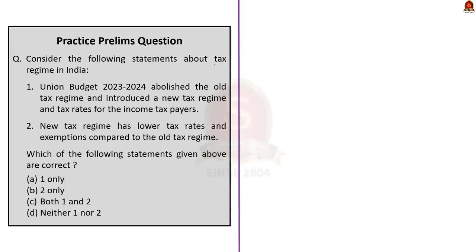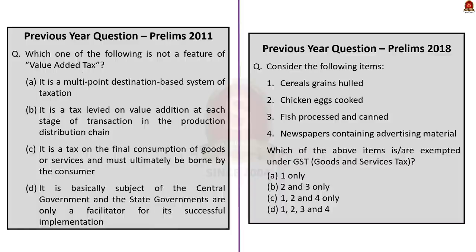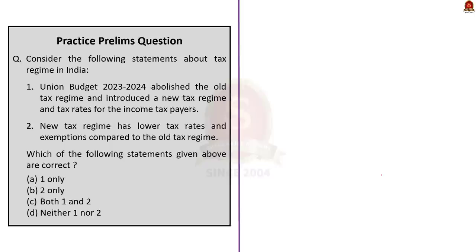The next question is about the tax regime in India. Since 2011, questions about tax have been asked in one way or another in the UPSC Prelims Examination — about value added tax in 2011 and products exempted from GST in 2018. In the 2023-24 union budget, the finance minister brought some changes to the tax regime, so this year UPSC might ask a question about it. This is a two-statement question and we have to find the correct statements.